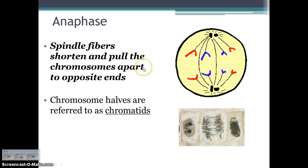Then in anaphase, the spindle fibers shorten and the chromosomes get pulled apart — now they are referred to as chromatids because they've been separated from their chromosome form. We've got a set of chromatids on each side heading toward the opposite poles of the cell.